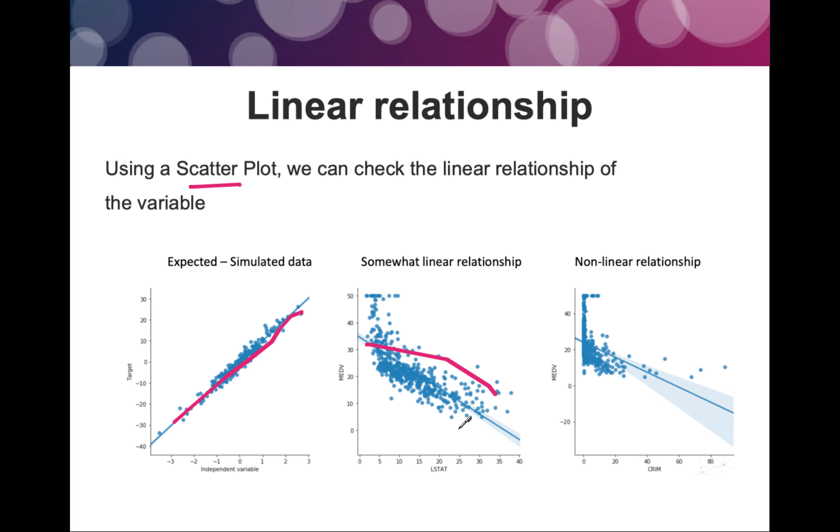This is somewhat linear. This is perfectly linear. This is somewhat linear. The perfect line would be this, but still, this is somewhat linear. But this is not a linear relationship. This is something else. How do we decide that a particular line is fitting well? It depends upon the error and the margin of error we are keeping in our threshold.